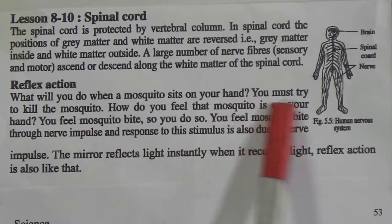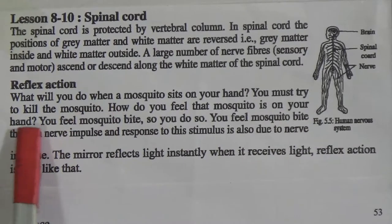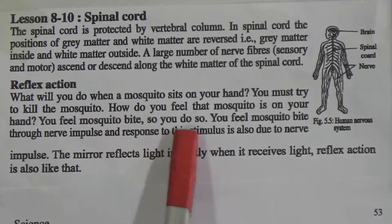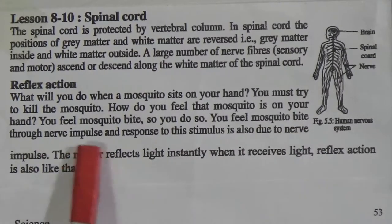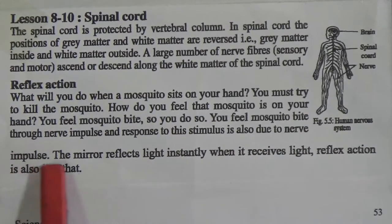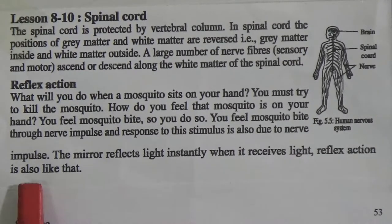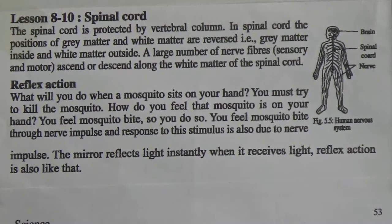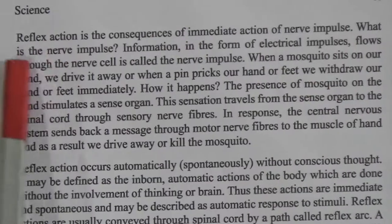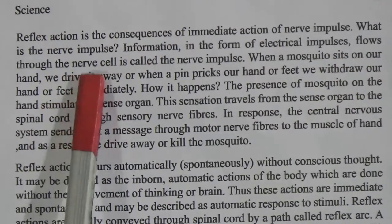Now we will discuss reflex action. What will you do when a mosquito sits on your hand? You must try to kill the mosquito. You feel the mosquito bite through nerve impulse, and the response to the stimulus is also due to nerve impulse. The mirror reflex reacts instantly when it receives light. Reflex action is the consequence of immediate action of nerve impulse — this is the definition of reflex action.